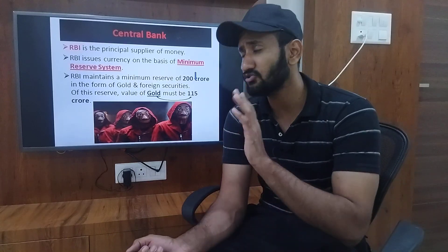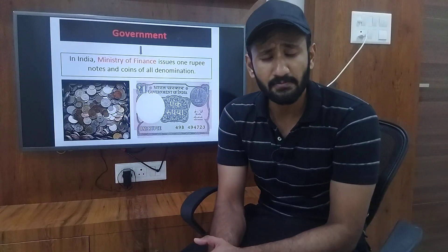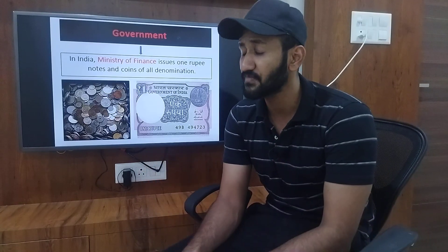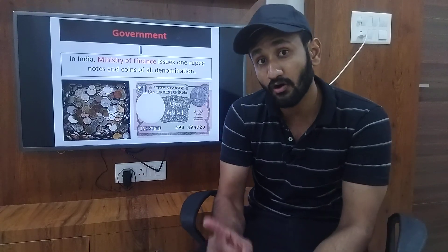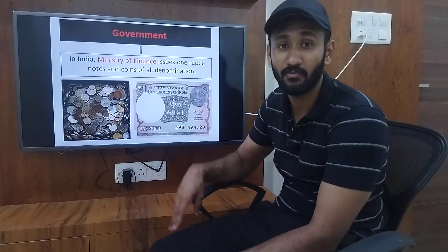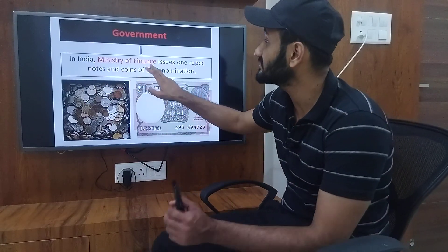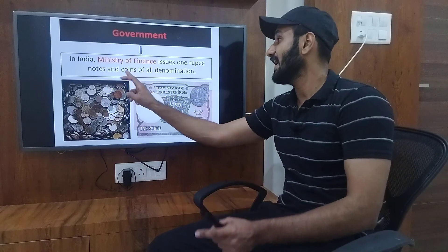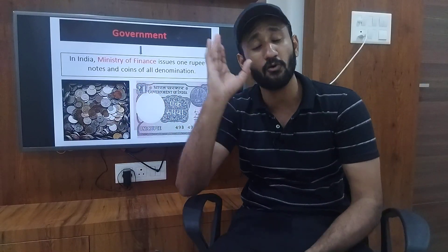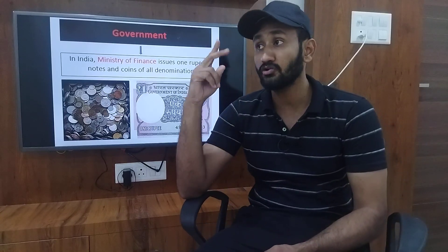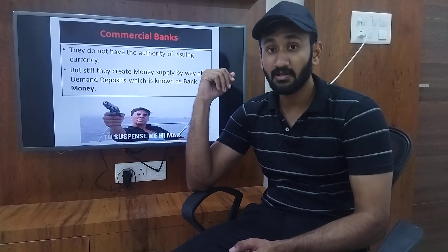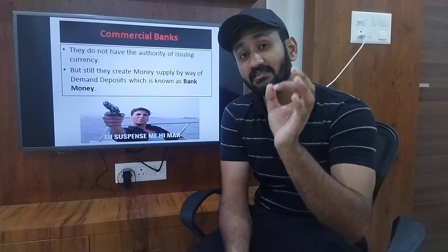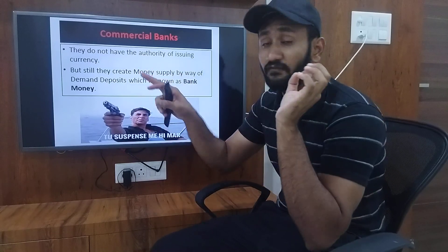The second supplier is the government. Note printing is done by RBI, but coins — the ones you take to school to buy snacks — 5 rupee, 10 rupee coins, and also the 1 rupee note — these are all printed by the government. The government's department, the Ministry of Finance in India, issues 1 rupee notes and coins of all denominations. So the work of making all coins belongs to the government.